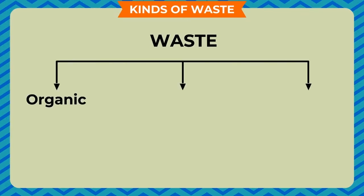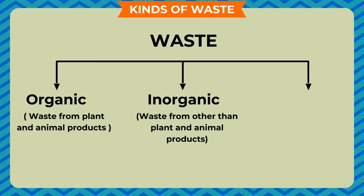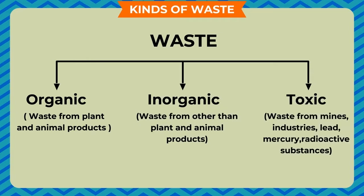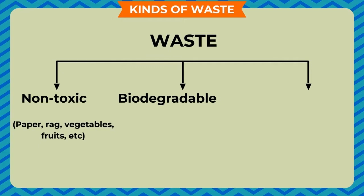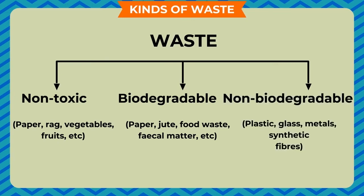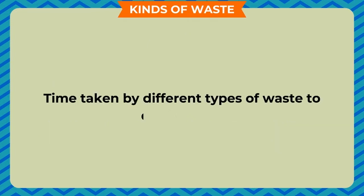Leaching is the seepage of dissolved substances from decomposing garbage into the soil; these dissolved substances are called leachate. Waste is classified as: organic waste from plant and animal products; inorganic waste from other than plant and animal products; toxic waste from mines, industries, lead, mercury, and radioactive substances. Non-toxic waste includes paper, rags, vegetables, and fruits.